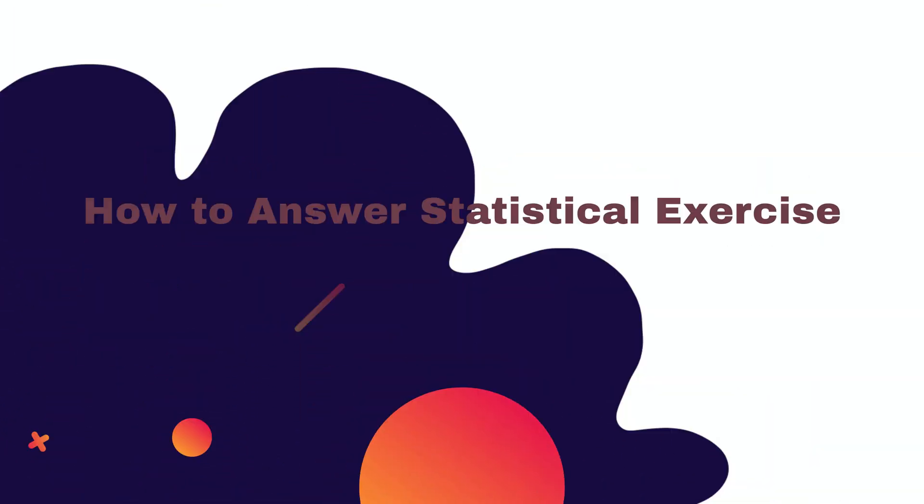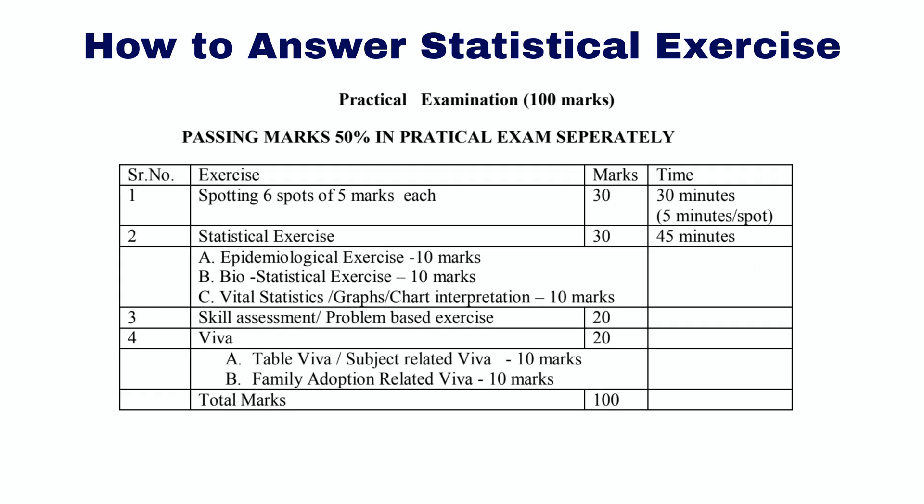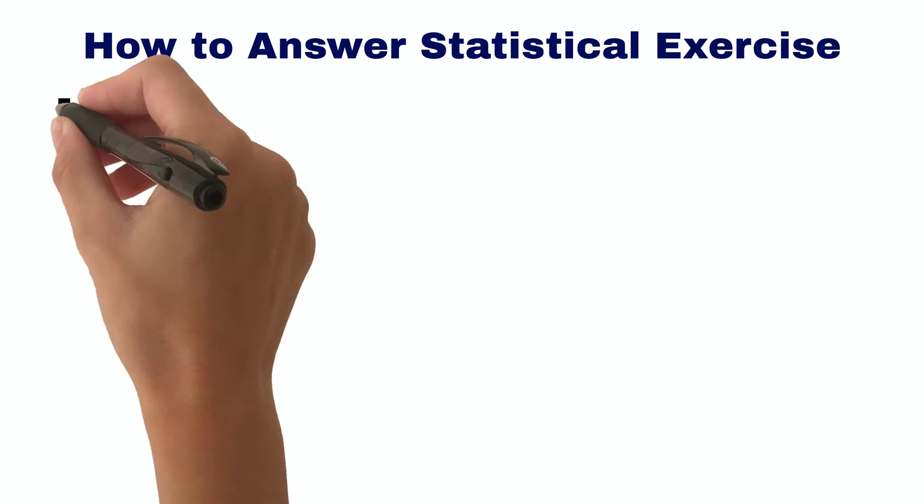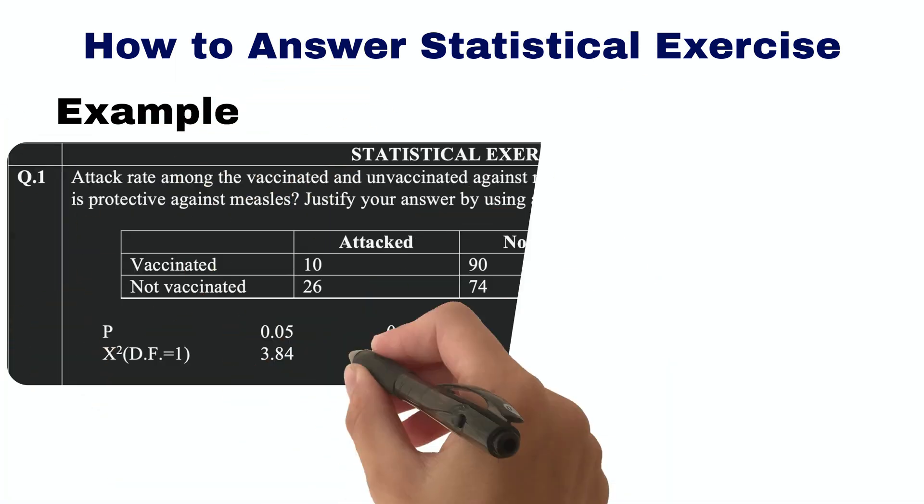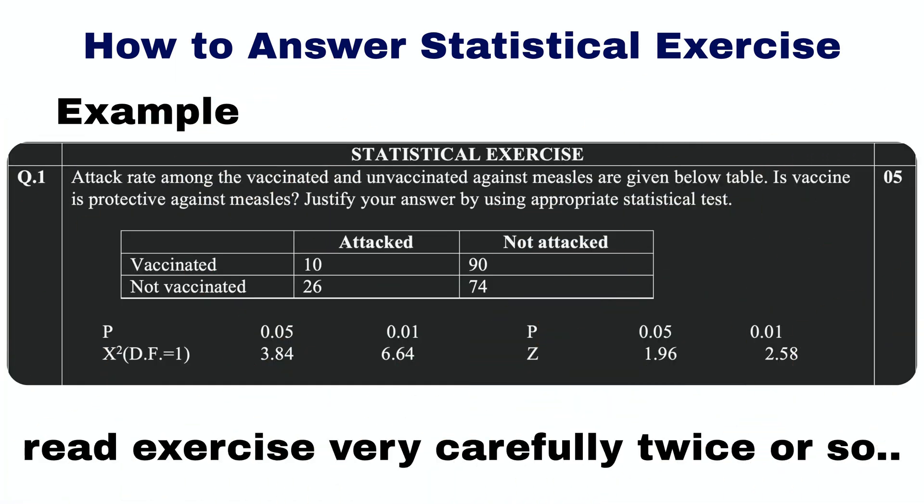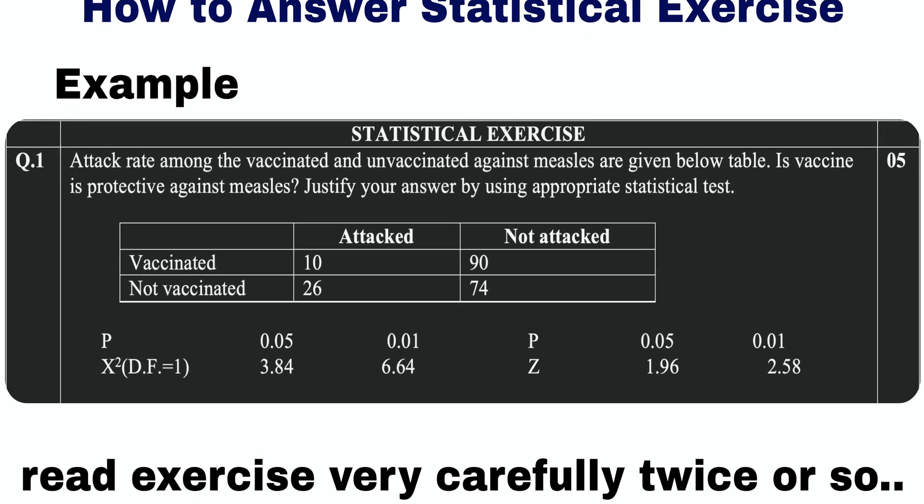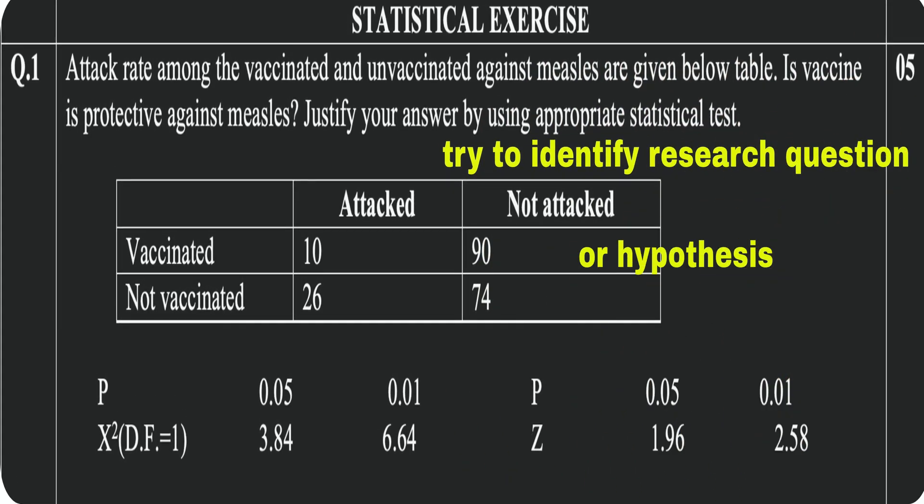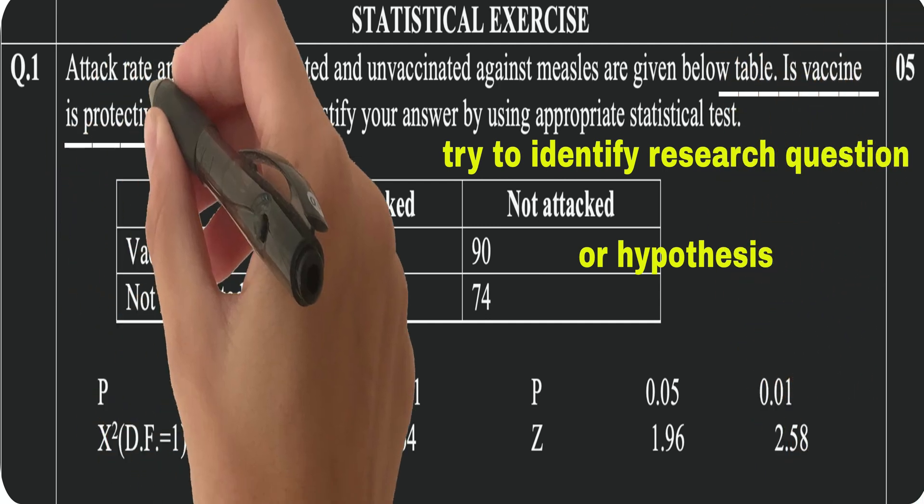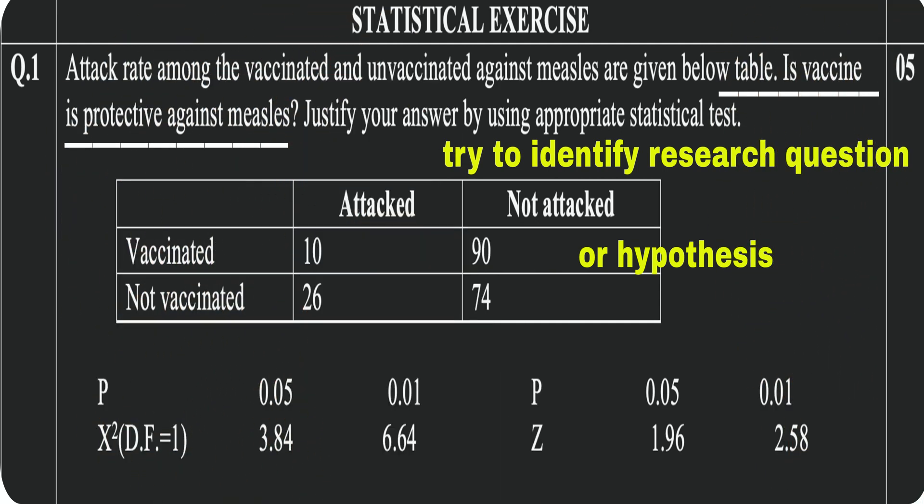Friends, today we will talk about how to answer any statistical exercise in five steps so that you can get the maximum marks. First of all, read the given statistical exercise very carefully so that you can get the idea regarding what problem has been solved. Like in this example, vaccine against measles, whether it is effective or not.